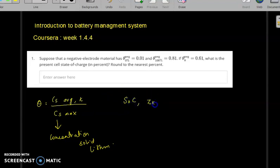We can use this stoichiometric ratio to find the state of charge of a cell. Let's say the state of charge of a cell is Z_k. From this given quantity, it can be expressed as theta_k minus theta 0% at the negative electrode, divided by theta 100% at the negative electrode minus theta 0% at the negative electrode. These are the stoichiometric quantities given at the negative electrode.